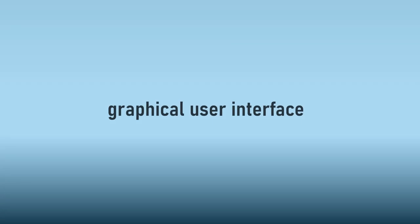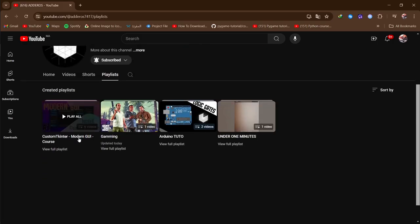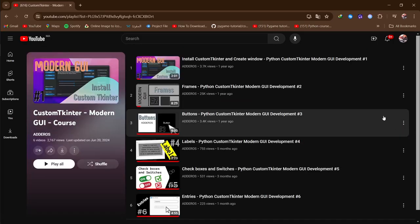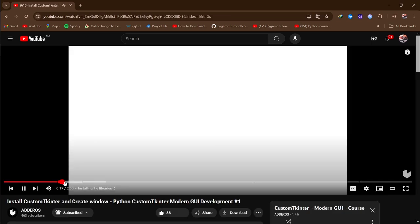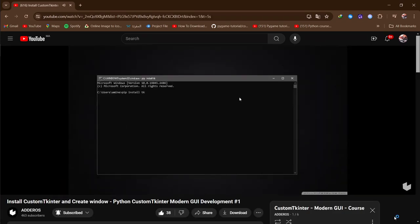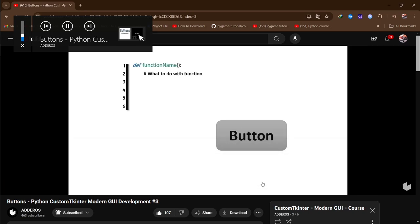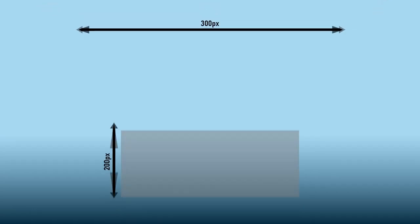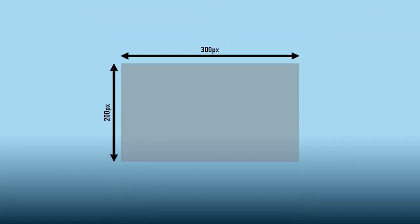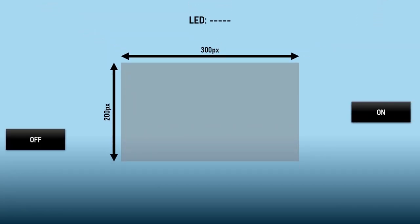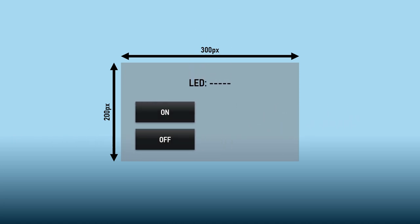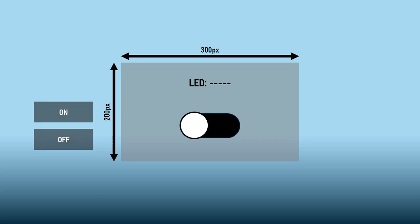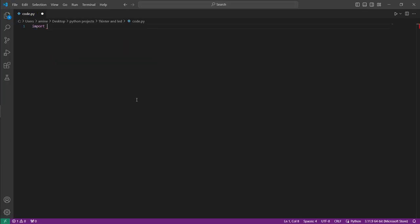For the graphical user interface, I created a playlist about the custom tkinter library. I recommend watching it, at least the first video about installing the library and the button tutorial — I'll put the link in the description. Now, first we create a 300 by 200 window with two buttons, On and Off. At the end of the video we'll replace the buttons with a switch.